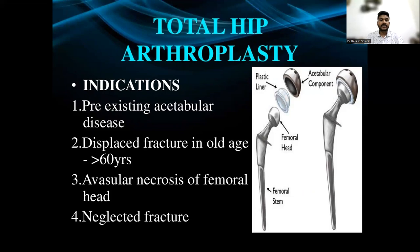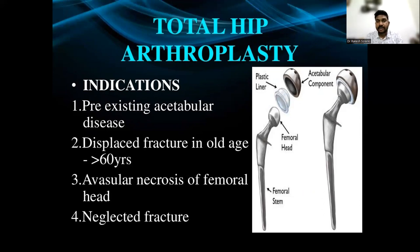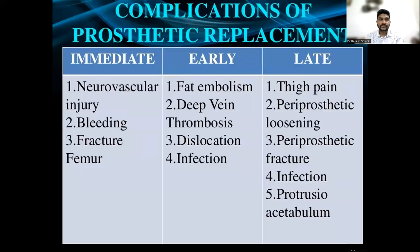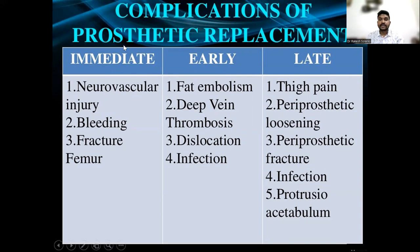Total hip arthroplasty replaces both the acetabular component and the femoral head. Indications include pre-existing acetabular disease, displaced fracture in old age, avascular necrosis of the femoral head, or a long-neglected fracture. Complications of prosthetic replacement include immediate: neurovascular injury, bleeding, and femoral fracture; early: fat embolism, deep vein thrombosis, dislocation, and infection; late: thigh pain, periprosthetic loosening, periprosthetic fracture, infection, and protrusio acetabuli.